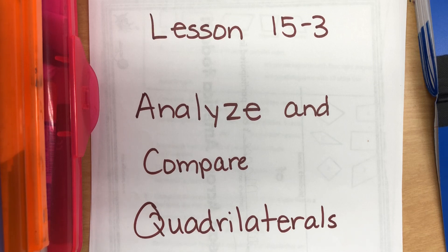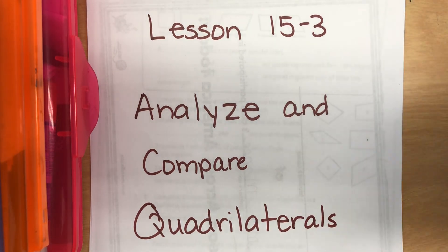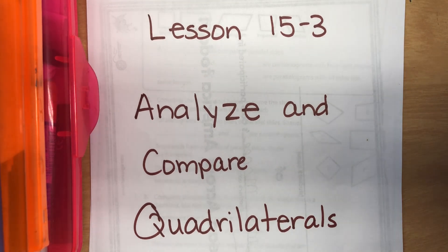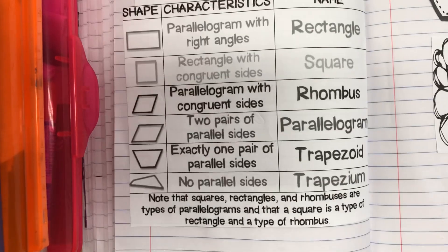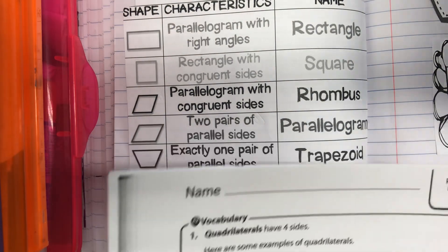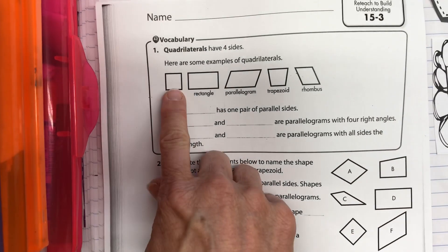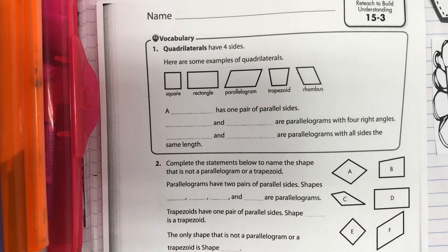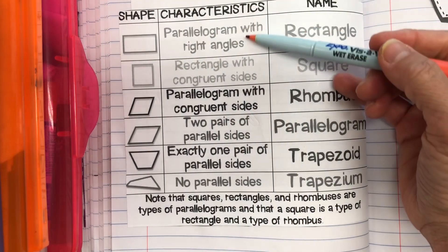Okay, lesson 15-3: analyze and compare quadrilaterals. We want to have our comp book out to help us. We have a square, a rectangle, a parallelogram, a trapezoid, and a rhombus.